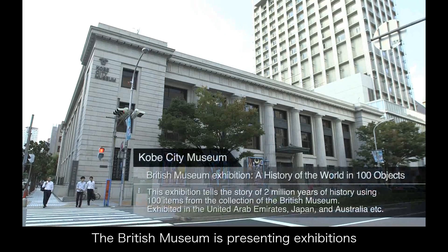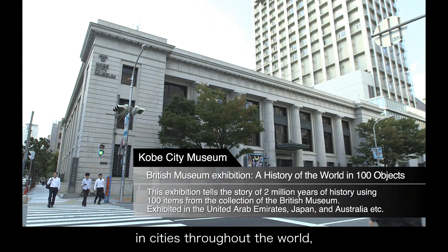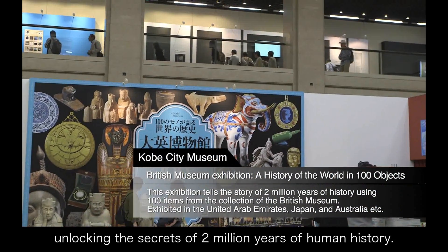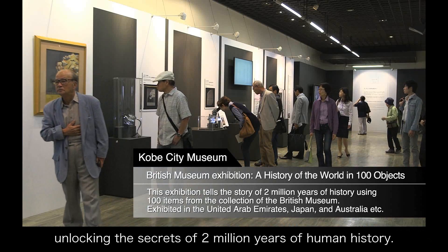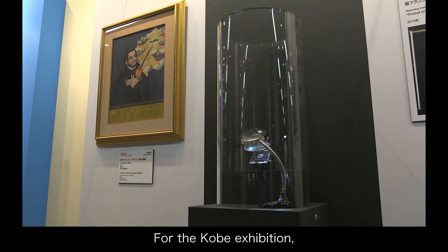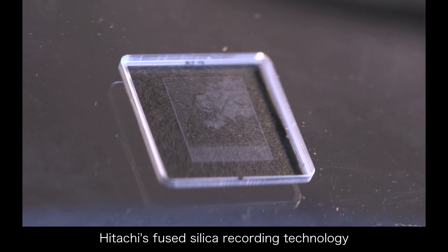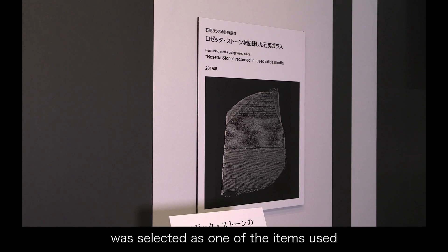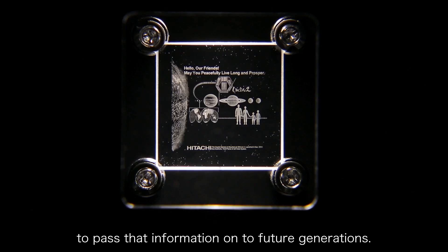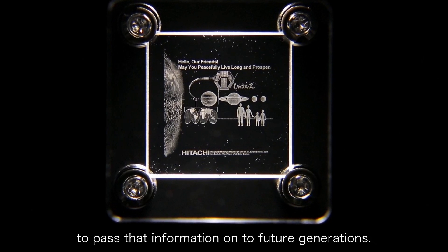The British Museum is presenting exhibitions in cities throughout the world, unlocking the secrets of 2 million years of human history. For the Kobe exhibition, Hitachi's fused silica recording technology was selected as one of the items used to pass that information on to future generations.